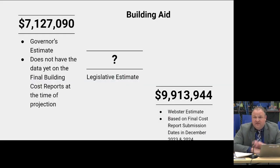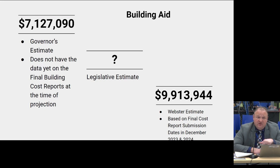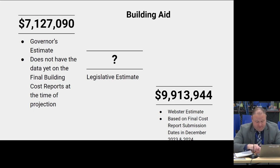Next up is building aid — this is one where it works in reverse for us. The governor had 7.1 million; the same concept — they don't have the final building cost reports when they do the projection. I'm actually projecting we're going to be at 9.9 million dollars for next year because we submitted a bunch of final cost reports in December 2023, and we'll be submitting more in December 2024, which will give us more aid based on completion of the 2018 project. They are way under the actual projection.